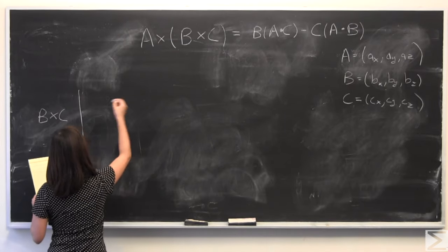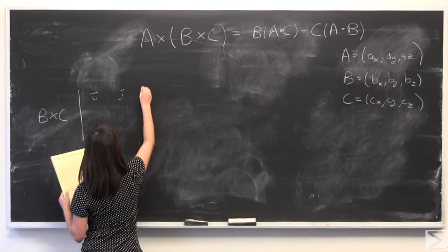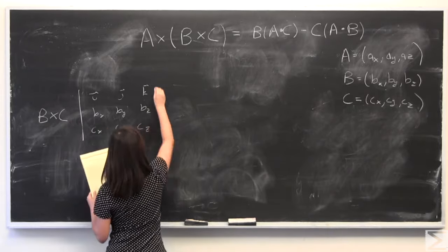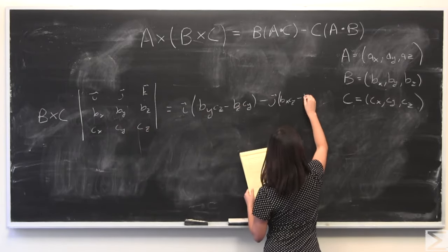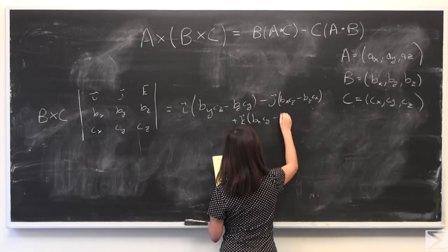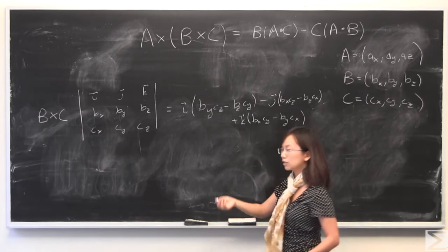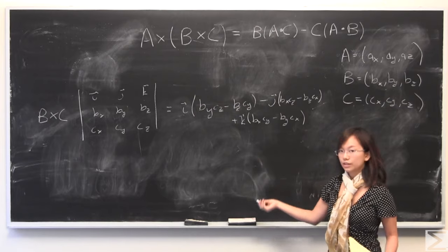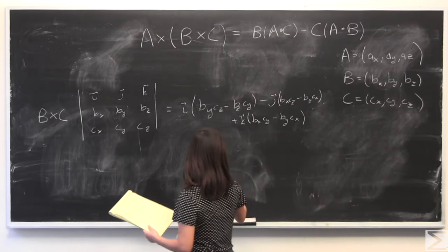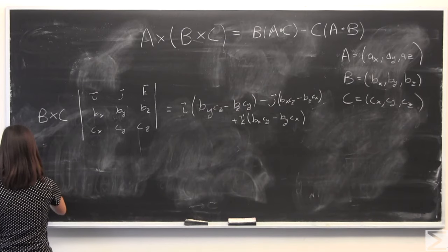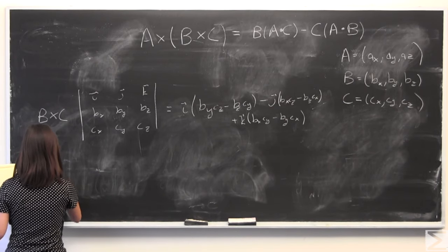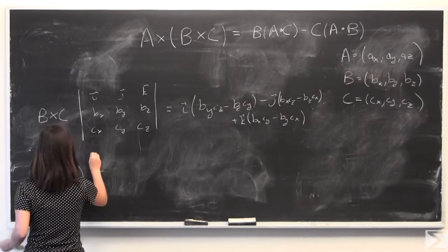I'm going to start with b cross c because it's in the parentheses. So cross product vectors, it's a pretty simple method of doing it. However, now we have a cross b cross c. And as you can expect, we have a lot of terms.